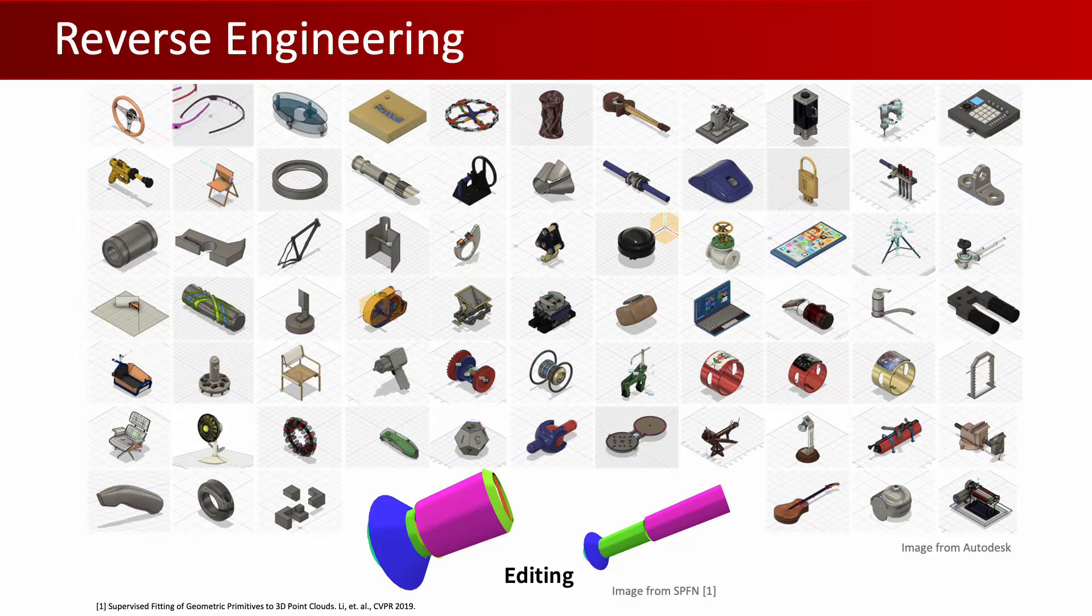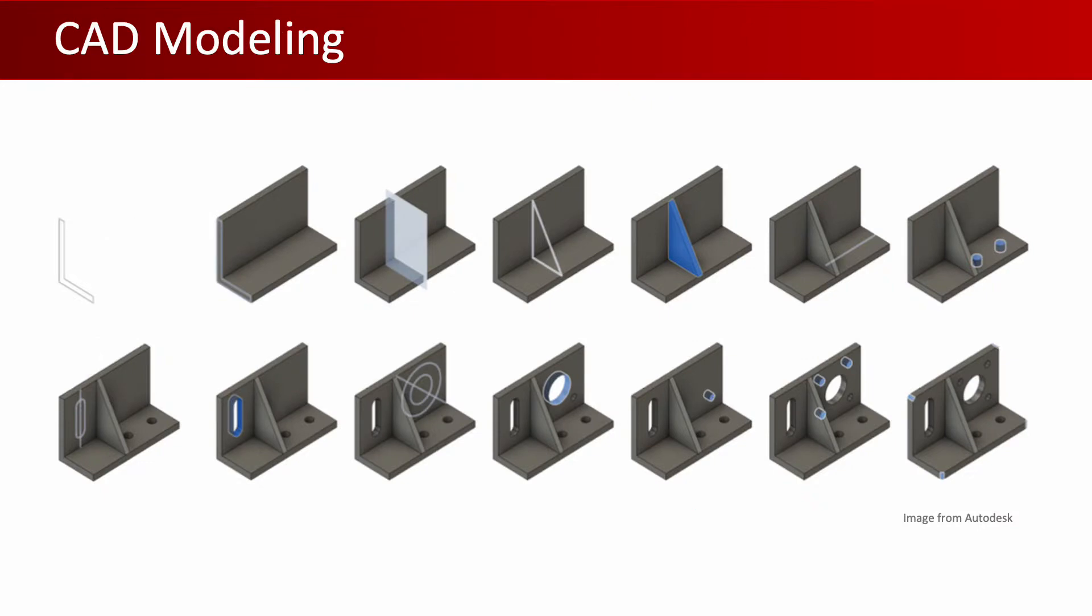Before we can reverse engineer a 3D model, we first need to understand the CAD modeling process. At the user level, a CAD model is designed as a sequence of operations where at each step the designer first draws a planar 2D sketch as a closed curve and later extrudes it into a 3D solid, which we call an extrusion cylinder. These extrusion cylinders are then combined through a series of Boolean operations, step by step, which results in the final model.